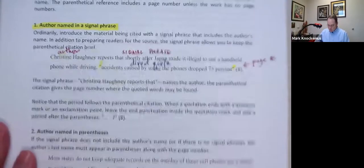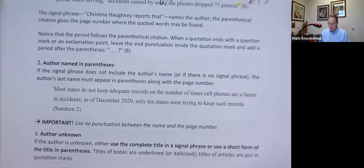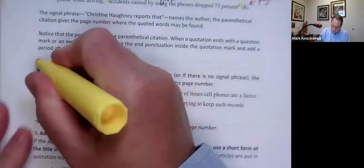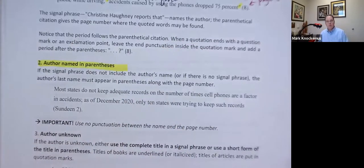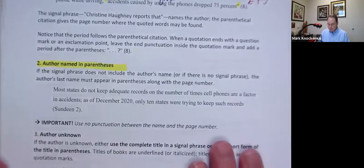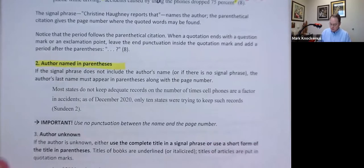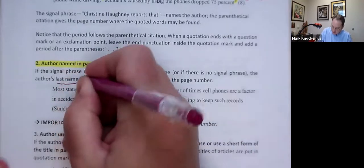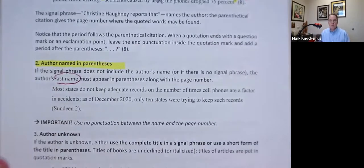The next one, number two, is the author being named in parentheses. So the first one, we have the author at the beginning. Now we're going to find the author at the end. If the signal phrase does not include the author's name, or if there is no signal phrase, the author's last name. Notice what? But just the last name, not first and last, just last name, must appear in parentheses along with the page number. Example,